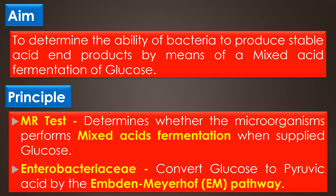The methyl red test determines whether the microorganisms perform mixed acid fermentation when supplied with glucose. All members of the Enterobacteriaceae can convert glucose to pyruvic acid by the Embden-Meyerhof pathway, or EMP pathway, but bacteria can further metabolize pyruvic acid by two different pathways.